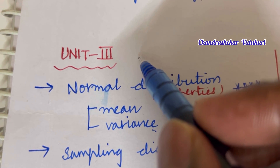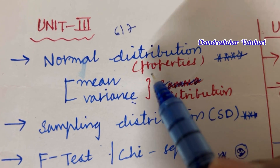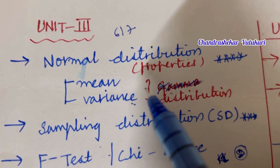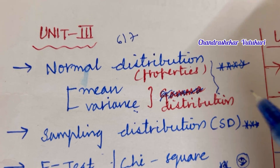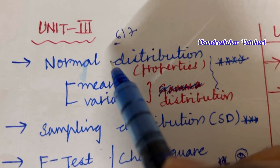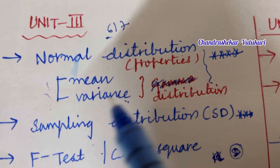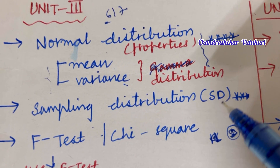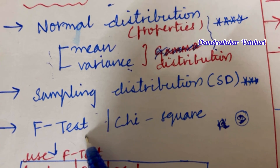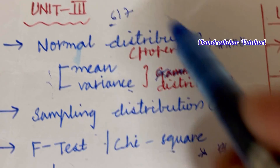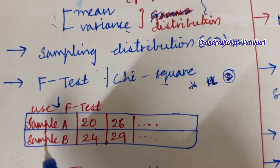Moving to question numbers 6 and 7, it's all about Unit 3. The normal distribution and its properties related to mean and variance, and the problems related to it, are said to be the topmost question. Related to normal distribution, you'll get one question, and they may ask mean and variance problems in the short questions too. Sampling distribution, F-test, and chi-square are said to be the topmost questions, which may occur in the 7th question, giving a template of sample A and sample B.